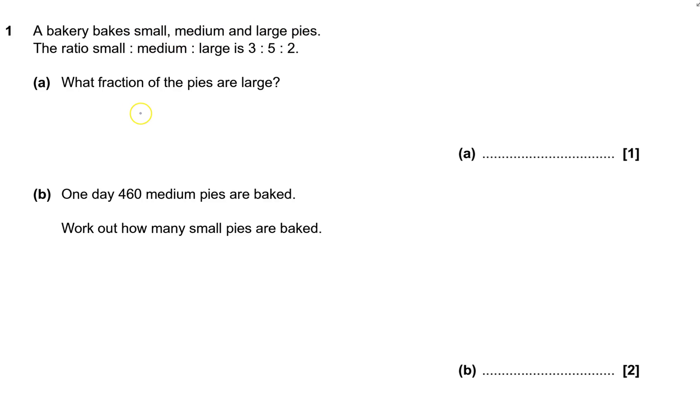A bakery bakes small, medium, and large pies. The ratio small to medium to large is 3 to 5 to 2. Always include a total, don't always need it. That would be 8, 9, 10.